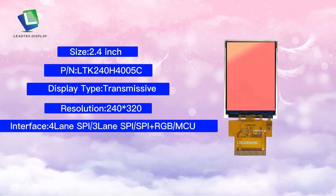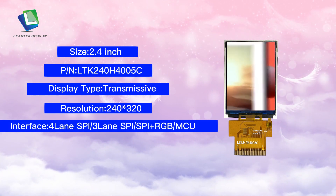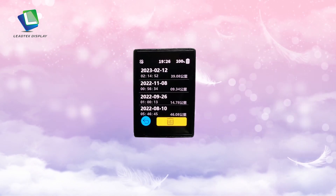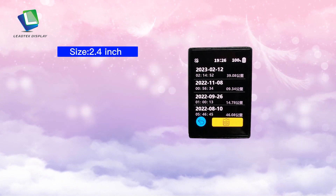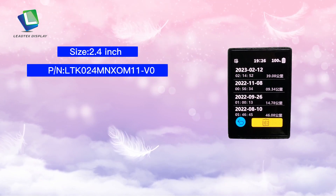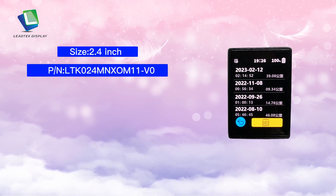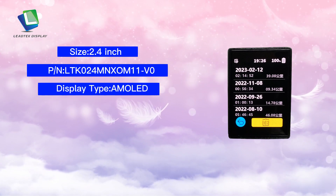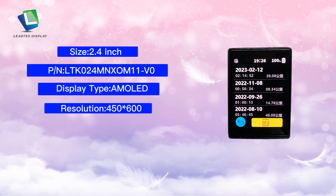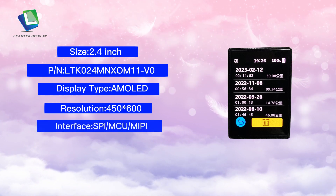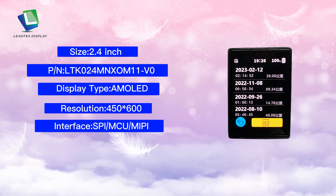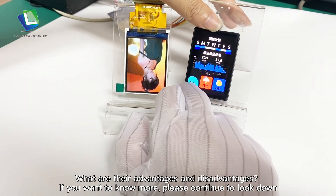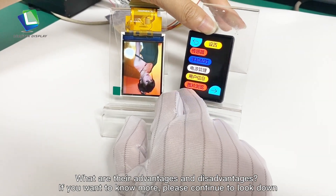Size: 2.4 inch, PN: LT-K024-MNXOM11-V0, display type: AMOLED, resolution: 456x600, interface: SPI, MCU, MIPI, luminance: 800 nit. What are their advantages and disadvantages? If you want to know more, please continue to look down.